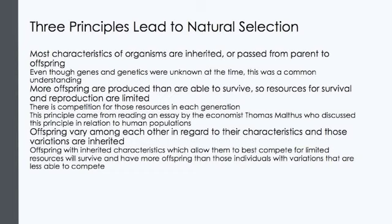Darwin's book drew a cohesive picture of life by connecting the dots between a bewildering array of seemingly unrelated facts. The Origin of Species focused biologists' attention on the great diversity of organisms, their origins and relationships, the similarities and differences, their geographic distribution, and their adaptations to the surrounding environments. Darwin identified three principles that lead to natural selection. One is that most characteristics of organisms are inherited or passed from parent to offspring — even though genes and genetics were unknown at the time, this was a common understanding. Furthermore, Darwin said that more offspring are produced than are able to survive, so resources for survival and reproduction are limited. There is competition for those resources in each generation.